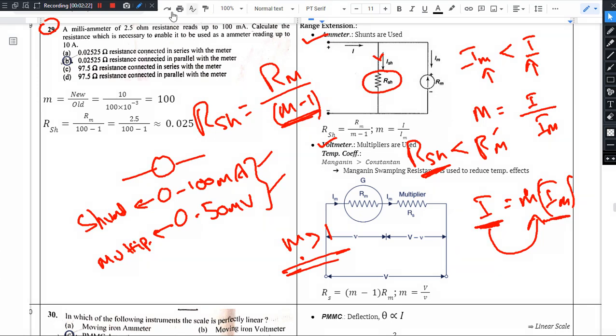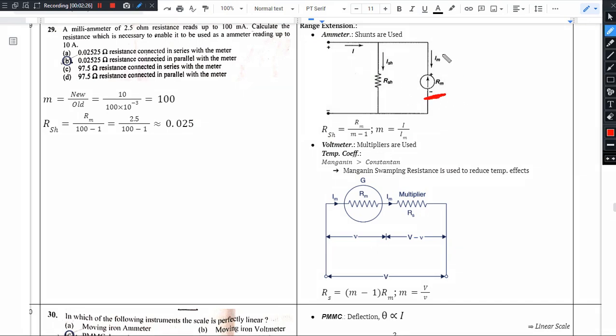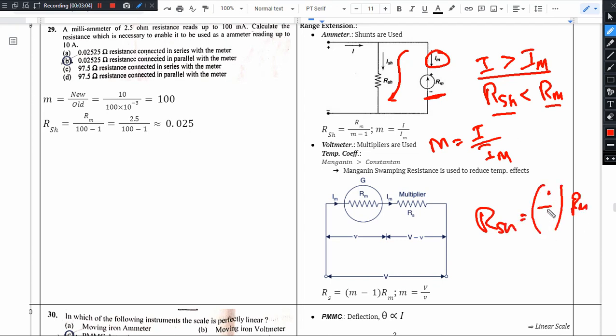The basic meter measures current i_m. When you measure very high current, this current will bypass through the shunt. Bypassing requires a resistance value, and shunt resistance is at least less than meter resistance. First determine the multiplying factor m equals i by i_m, and then R shunt equals Rm divided by m minus 1. This is about ammeter range extension.